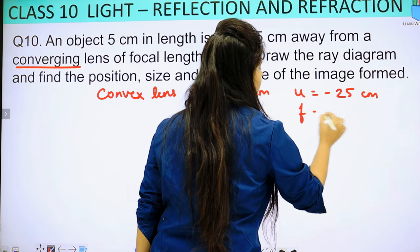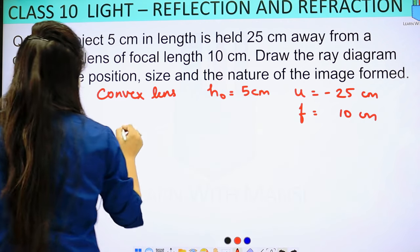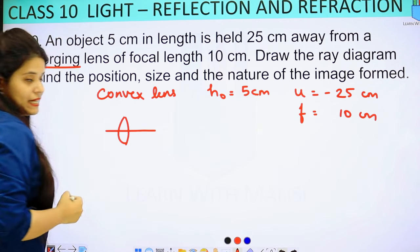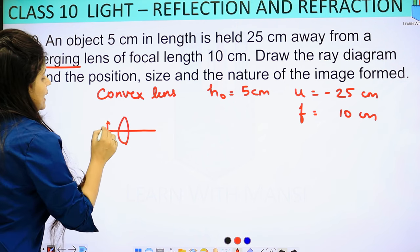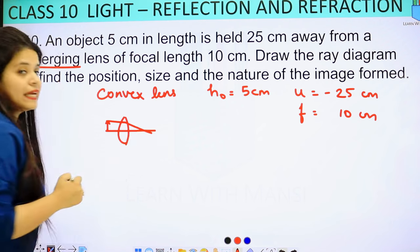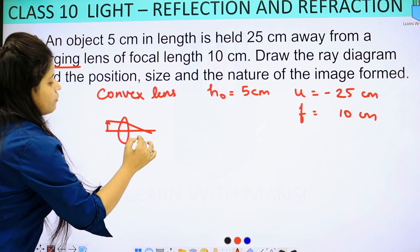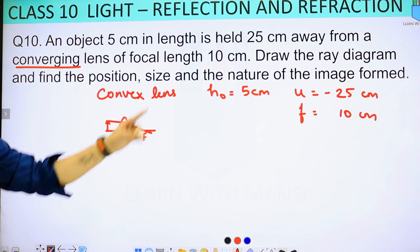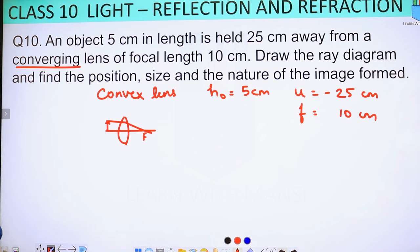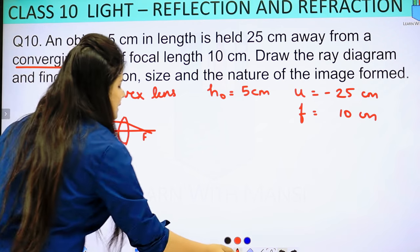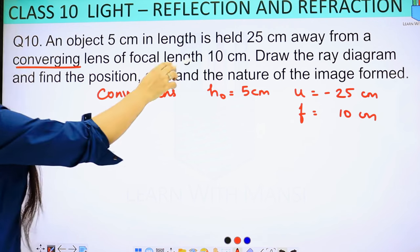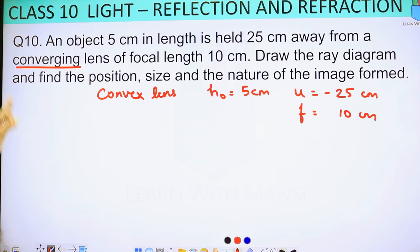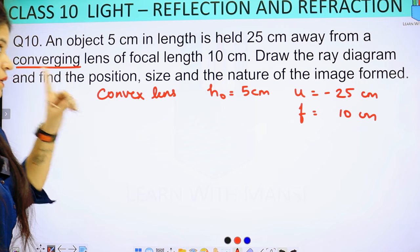Focal length is 10 cm. If there is a convex lens and we have placed the object on the left, the focal length is on the positive side, so it will be plus 10 cm. If it were concave, it would be minus 10 cm. We need to pay attention to the sign every time. The question asks us to draw the ray diagram and find the position, size, and nature of the image.